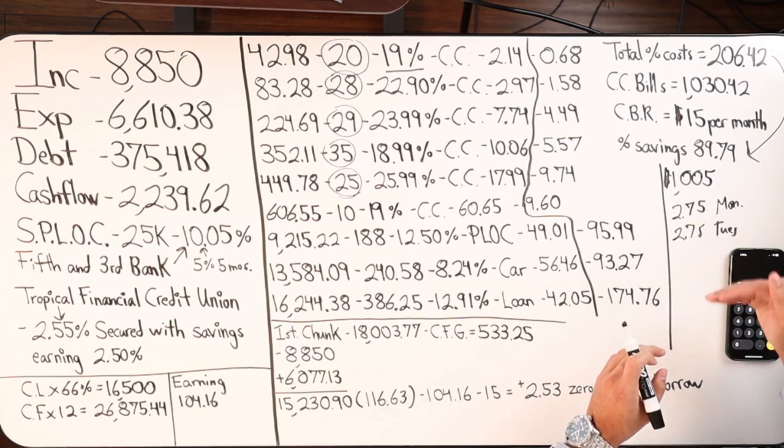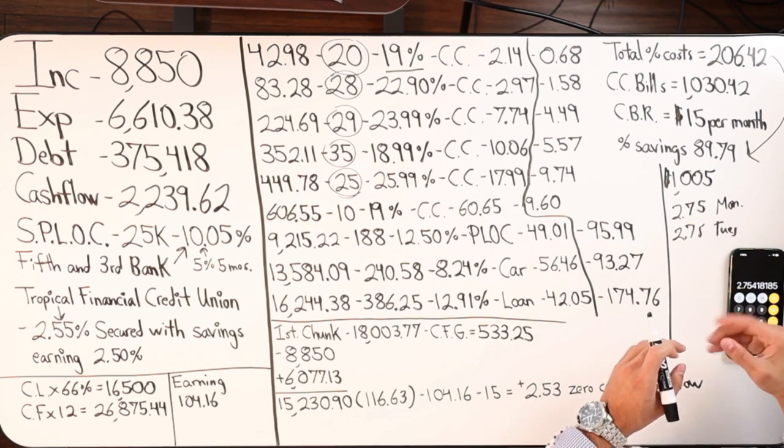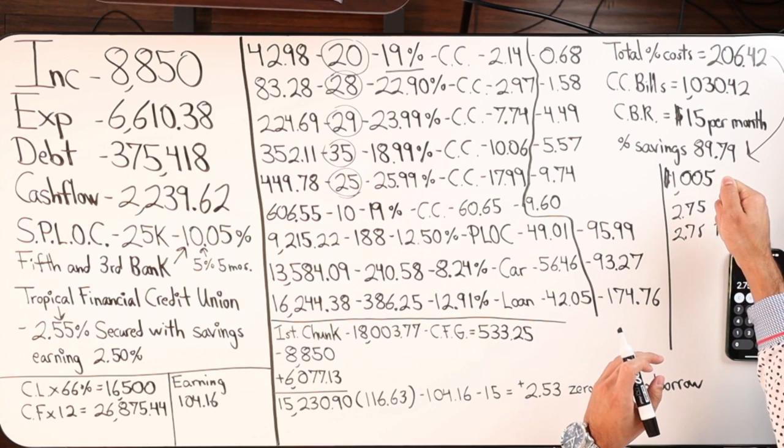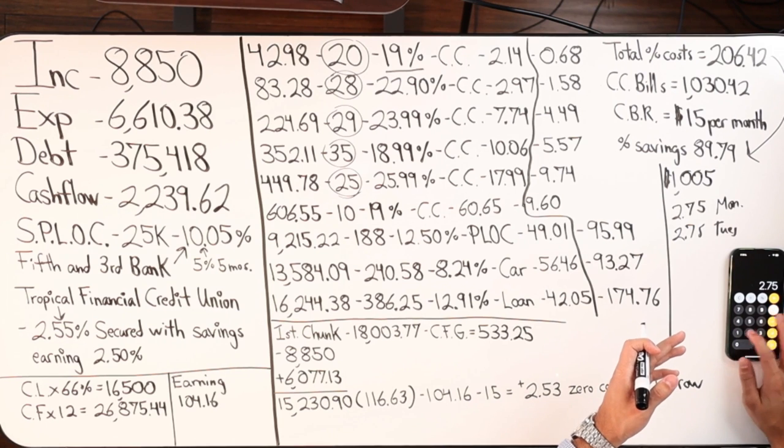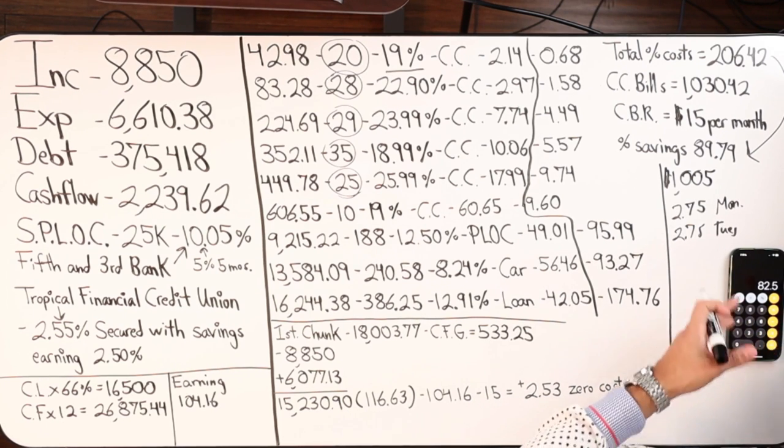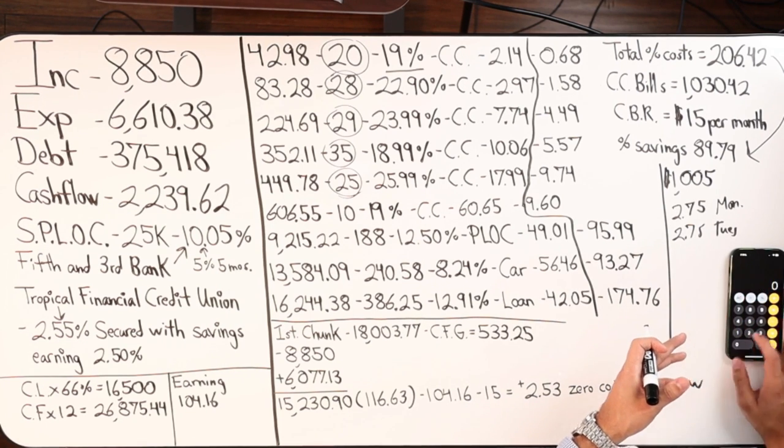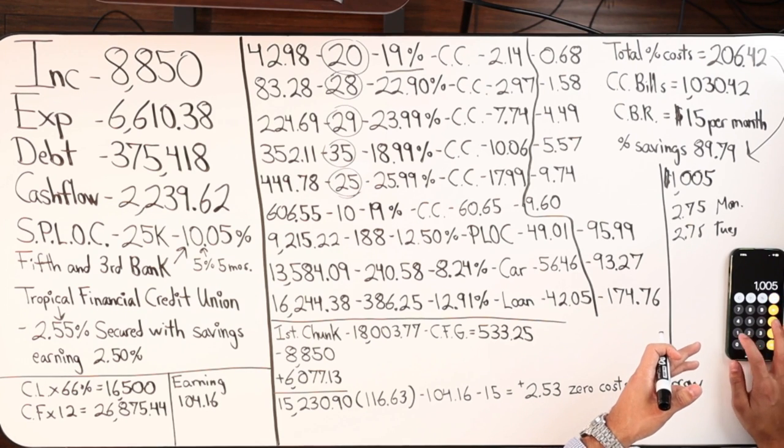So, however much interest accrued during that time, they now will owe. 2.75 times 30, so it was around 80, 83 bucks. So, it's 10,005 divided by 12.